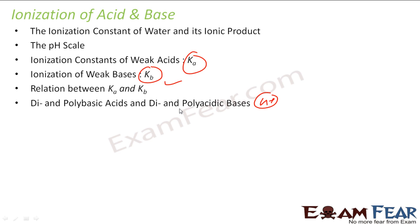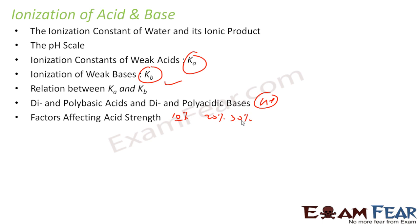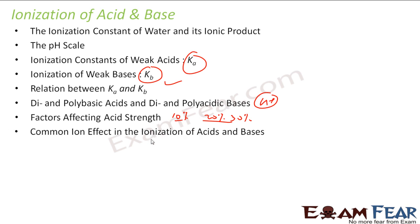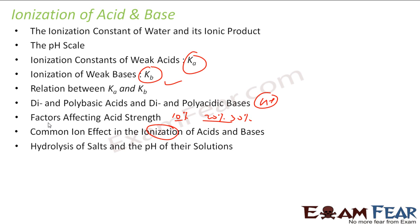We will also study dibasic and polyacidic bases, the factors that affect acid strength — as some acids have 10%, 20%, or 30% ionization — the common ion effect on the ionization of acid and base where adding certain ions impacts ionization, and finally the hydrolysis of salt and pH of their solutions. We will discuss all these things in the next few slides.